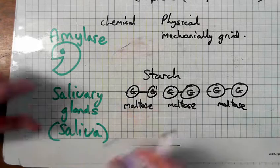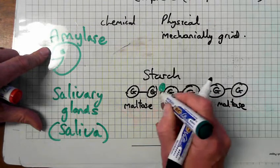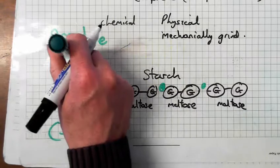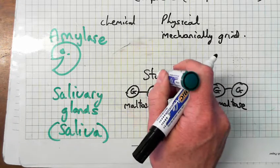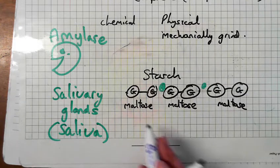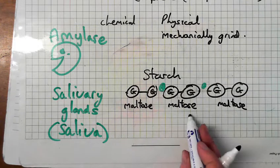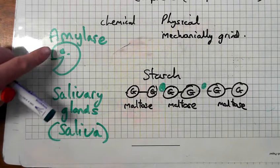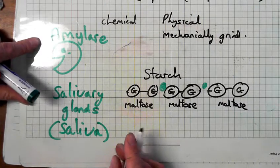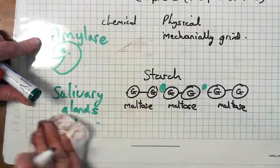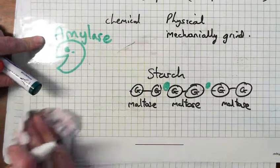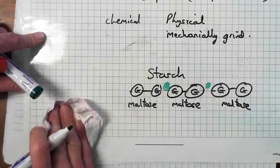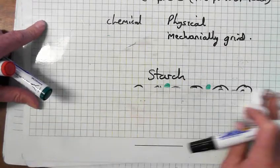So what does amylase do? It breaks starch into maltose molecules. Where else will you find amylase? It's also produced in the mouth, and amylase is also produced in the pancreas — we'll get on to that in a second.